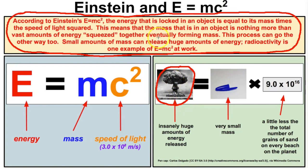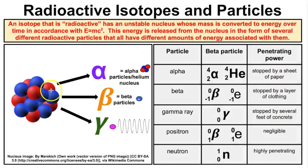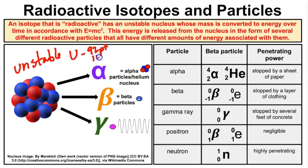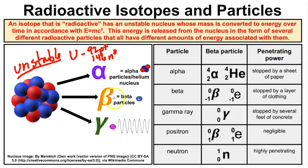So how does E equals mc squared apply to radioactivity and radioactive particles and isotopes? When we have a radioactive isotope, the nucleus is really unstable. For example, a uranium atom has 92 protons and about 146 neutrons inside its nucleus — a lot of tiny particles jam-packed into a super small space. As a result, that uranium atom is very unstable, and over time its nucleus will start to convert some of its mass into energy in the form of alpha particles, beta particles, or gamma rays.